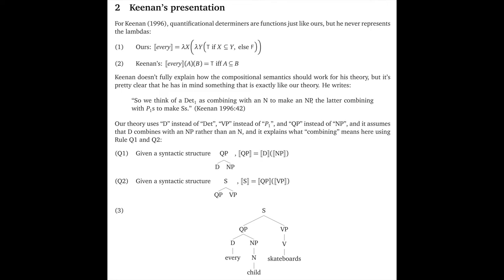Now, why didn't Keenan use lambda and such? I'm actually not sure. I suspect it's because he wanted fewer symbols cluttering up an article that's already kind of comically full of symbols. But I would argue that, despite some clutter, our view is superior. Consider this quotation from the article. Keenan says, 'So we think of a det1 as combining with an n to make an np, the latter combining with p1s to make ss.' So we'll circle back on all those abbreviations. To start, though, let's ask, what does combining mean in this quotation? It seems like Keenan has a theory of composition in mind, but he doesn't specify it precisely.